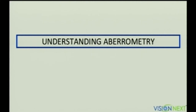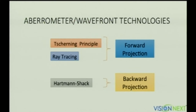Moving on to the second half of the talk: understanding aberrations. Aberrations are imperfections of the human optical system that influence visual outcome — that is why they are important. They are measured using different aberrometers working on various principles, including Hartmann-Shack wavefront sensing.